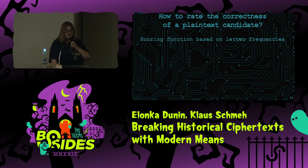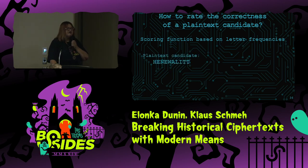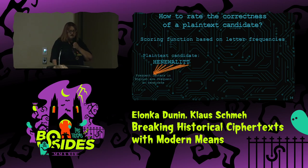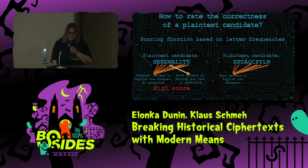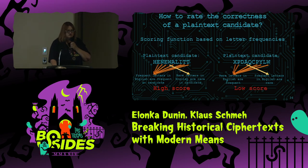So, correctness: how are we rating it? In this particular case, we check the letter frequencies and look at the candidate plaintext. If it has letters that are frequent in English appearing frequently in the candidate, that gives a high score. If rare letters are rare in the candidate, that's also a high score. But if rare letters are common and common letters are rare, that would be a low score.